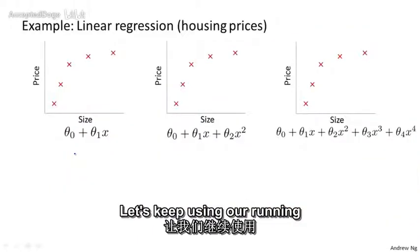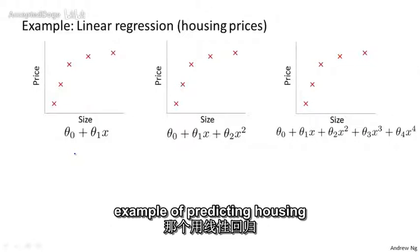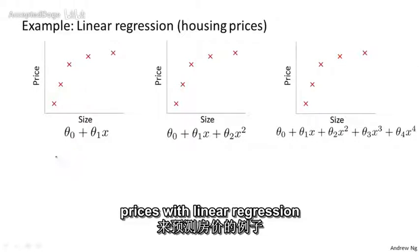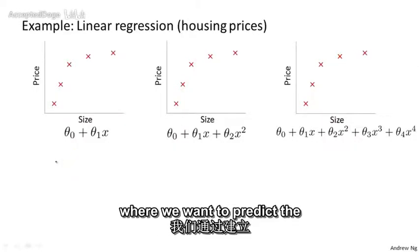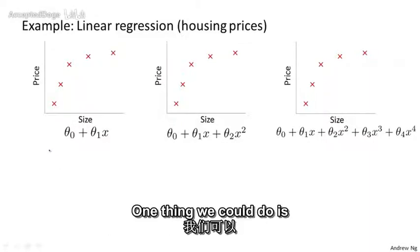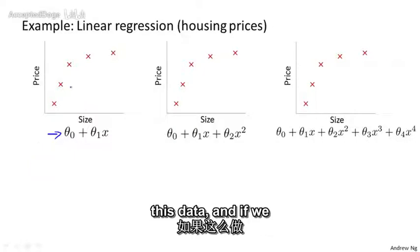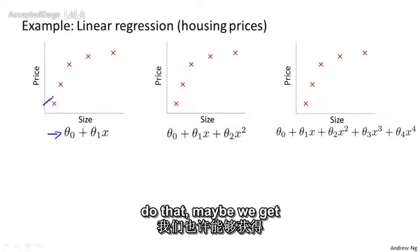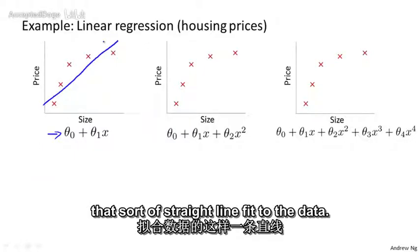Let's keep using our running example of predicting housing prices with linear regression, where we want to predict the price as a function of the size of the house. One thing we could do is fit a linear function to this data, and if we do that, maybe we get that sort of straight line fit to the data.